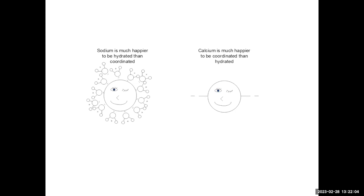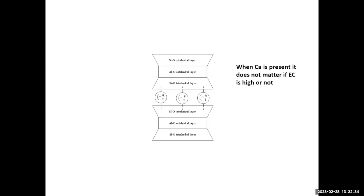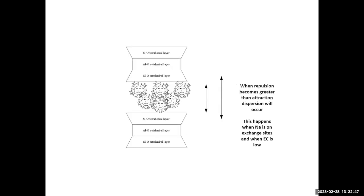Sodium is a cation that likes to be hydrated — it likes to have water around it. Calcium, on the other hand, is more coordinated — it likes to be connected to things. That's why calcium is a flocculant: it connects to the negative clay particles and holds them together. When calcium is present, it doesn't matter if electrical conductivity is high or not — it holds on. Sodium, because it wants to be hydrated, can't hold those negative charges together, so they get farther and farther apart.